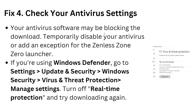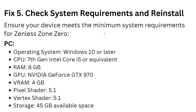Fix 4: check your antivirus settings. Your antivirus software may be blocking the download. Disable your antivirus or add an exception for the Zenith Zone 0 launcher. If you are using Windows Defender, go to Settings, then Update & Security, then Windows Security, then Virus & Threat Protection, and turn off real-time protection and try downloading again.